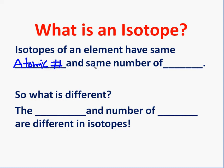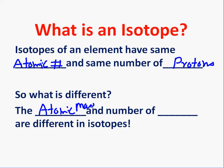Let's summarize isotopes. Isotopes of an element have the same atomic number, and if the atomic number is the same, they have the same number of protons, because atomic number and number of protons are always equal. What is different is the atomic mass number and the number of neutrons — these are the two things that differ between isotopes.